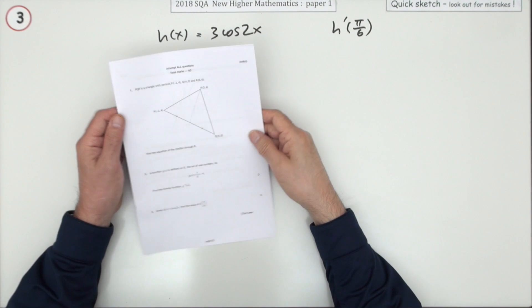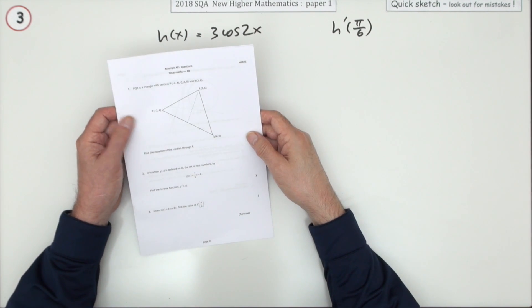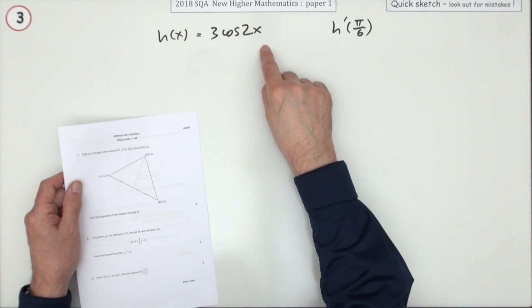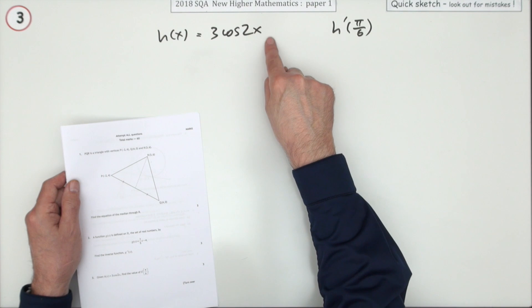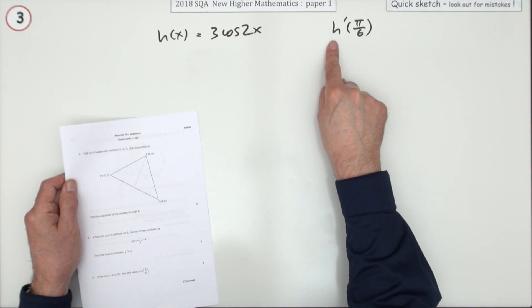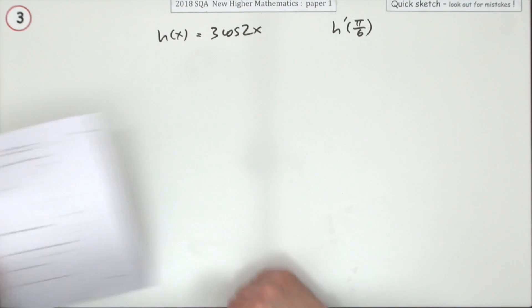Number three from paper one of the 2018 higher maths. Three marks for this little differentiation. Differentiate this term here and find its value when x is π/6.